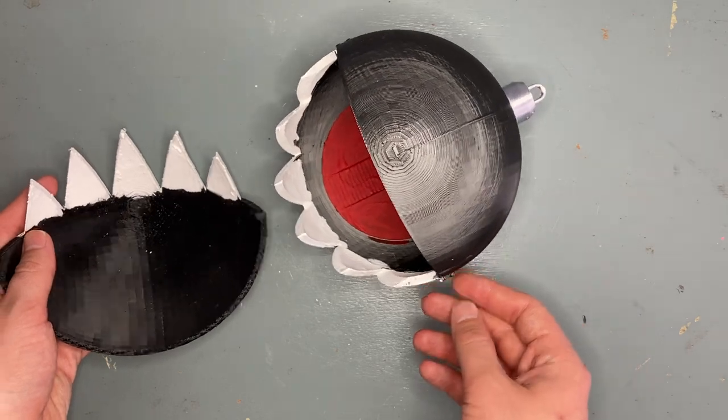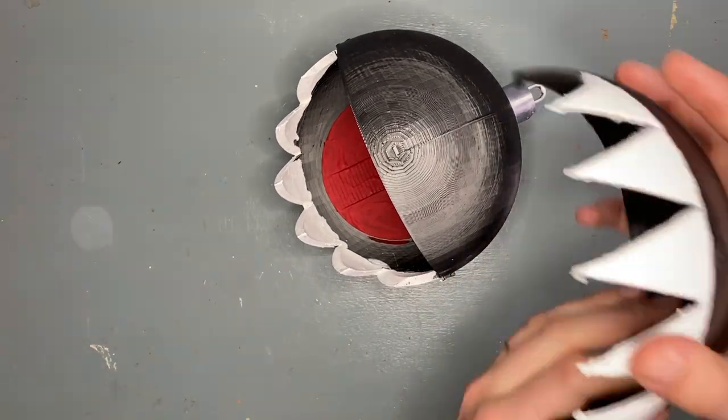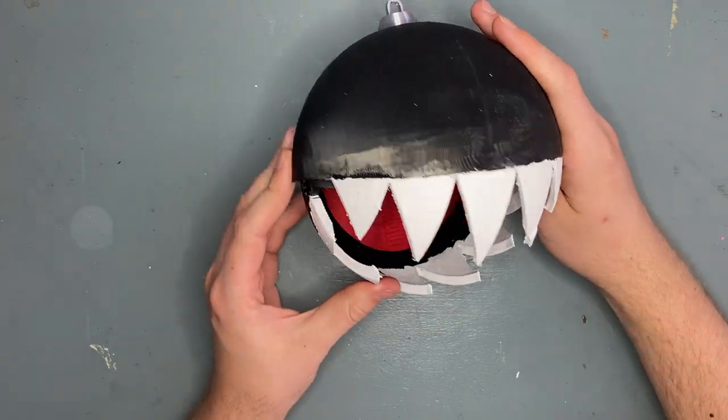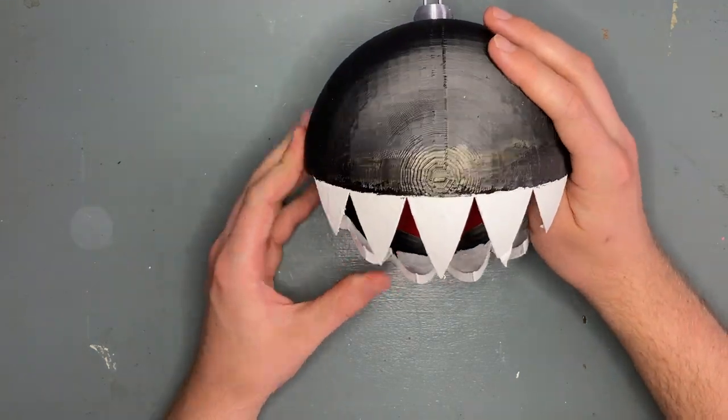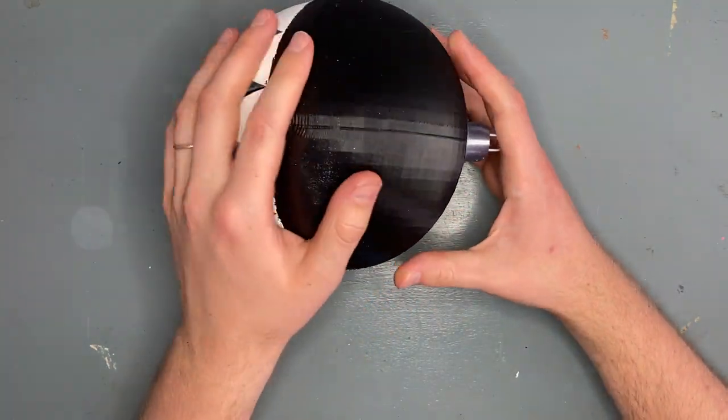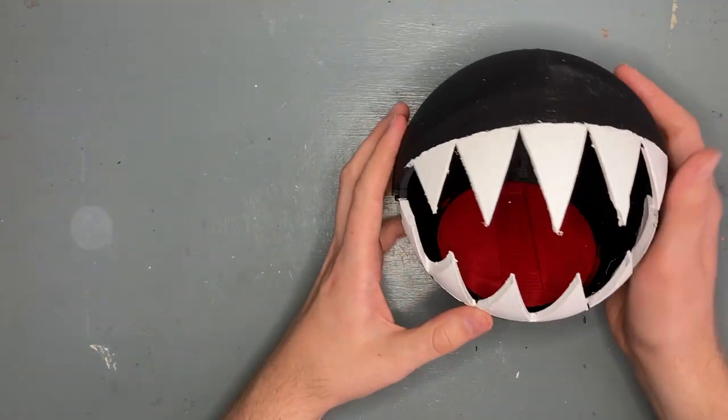Next, we can attach the two halves of the Chain Chomp together. The top half just slides right onto the bottom half and connects using the two pin holes on the sides, right by the edges of the jaw. You should hear an audible click. This click will let you know that it's locked into place.